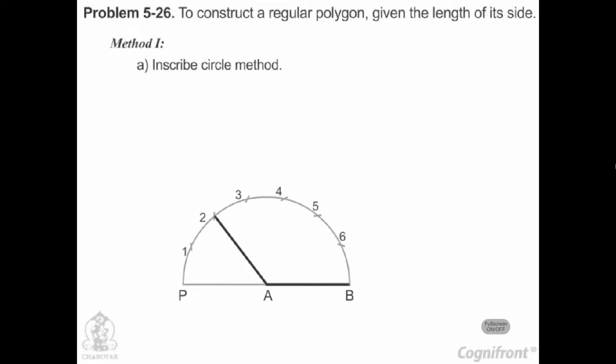Inscribe circle method. Draw perpendicular bisectors of A2 and AB intersecting each other at O. With center O and radius OA,